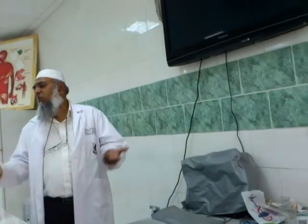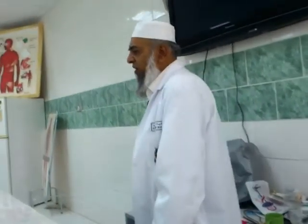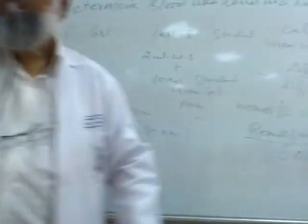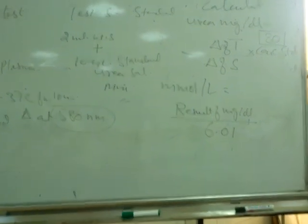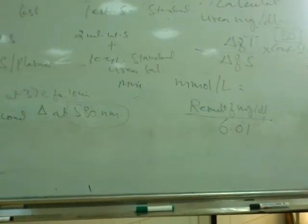This conversion is not always necessary, but useful because some labs report results in mg/dL while others report in millimoles per liter. If the report is given in millimoles per liter and you want to convert back to mg/dL, simply multiply by 6.01.